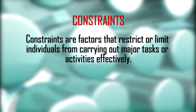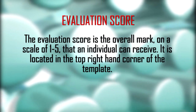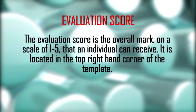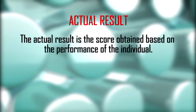Constraints are factors that restrict or limit individuals from carrying out major tasks or activities effectively. The evaluation score is the overall mark on a scale of 1 to 5 that an individual can receive. It is located in the top right-hand corner of the template. The actual result is the score obtained based on the performance of the individual. Now that we have defined the key terms, let's take a look at populating the template.